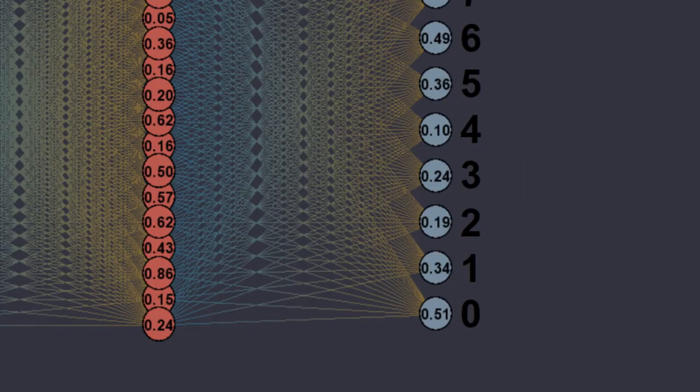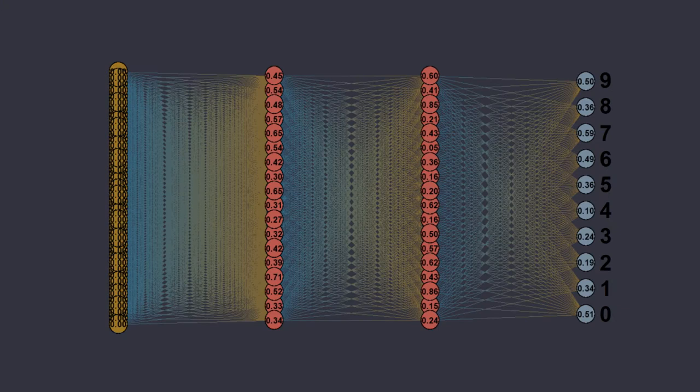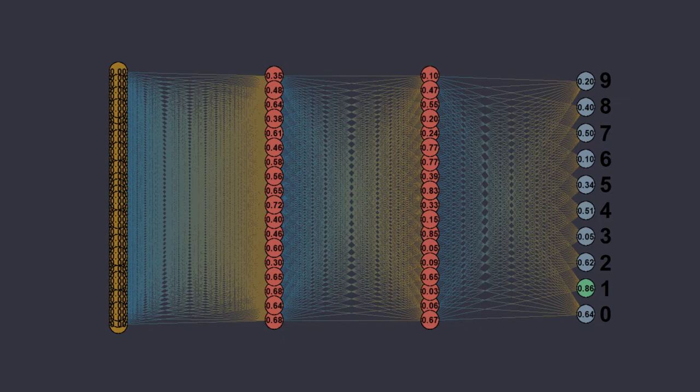For example, the fourth row from the bottom tells us the network thinks the answer is the number 3 with a confidence of 24%. The highest between these values is the real answer from the network. I can read the 0.86 reached in the second row from the bottom, so the network final answer is a 1.